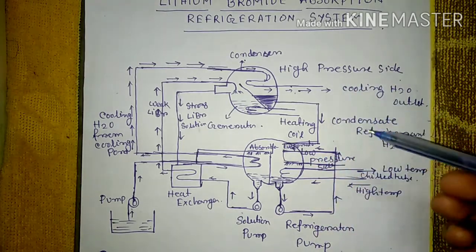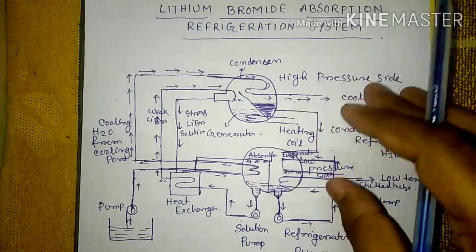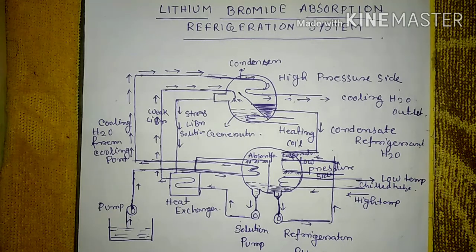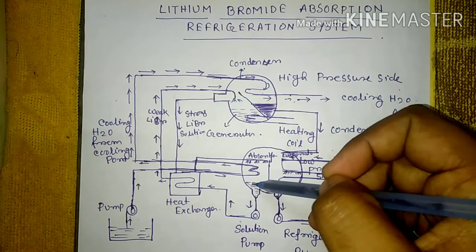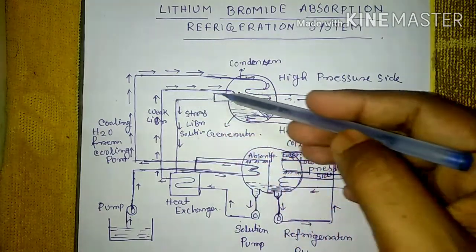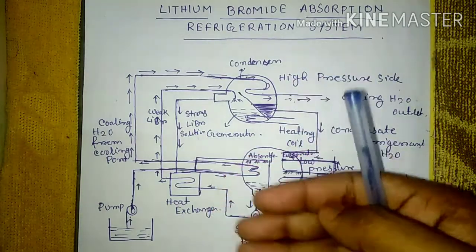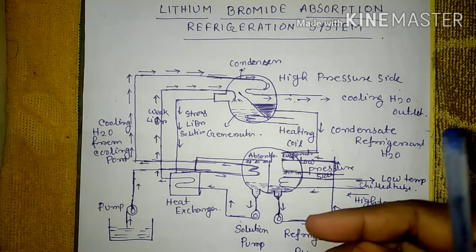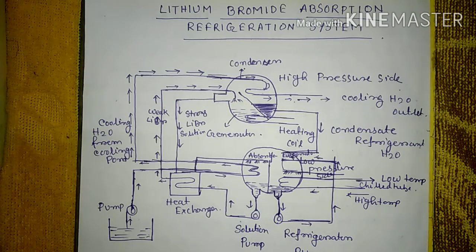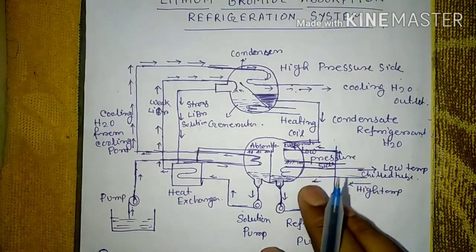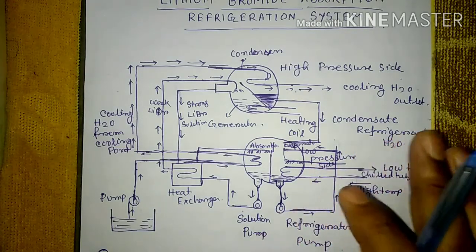One important thing: lithium bromide is corrosive in nature. When it flows through the various metal parts of the system — channels, devices — it can cause corrosive damage. To minimize this corrosion effect on metal parts, lithium bromide inhibitors are generally added.